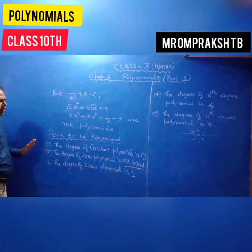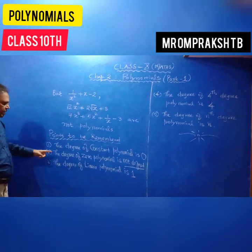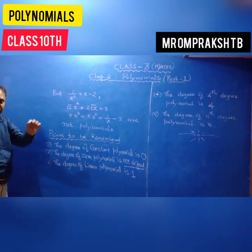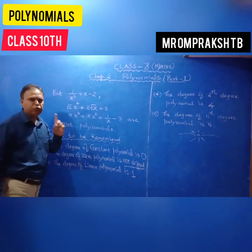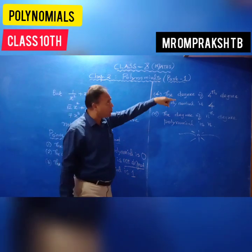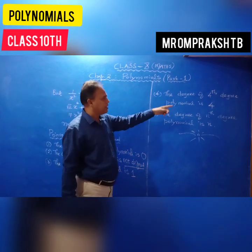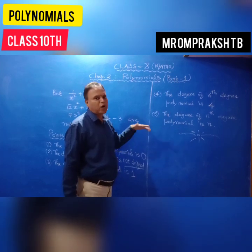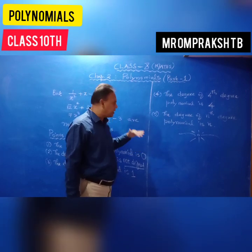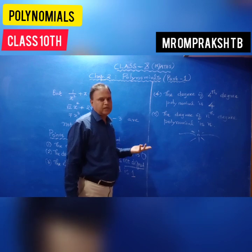Some important points to always remember: degree of a constant polynomial is 0; degree of the zero polynomial is not defined; degree of a linear polynomial is 1; degree of a quadratic polynomial is 2; degree of a cubic polynomial is 3; degree of an nth degree polynomial is n.